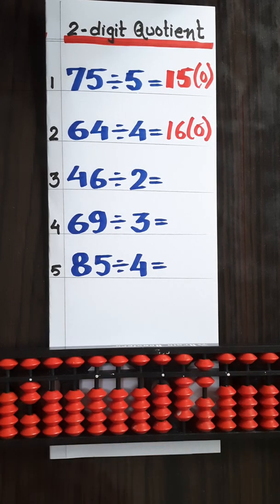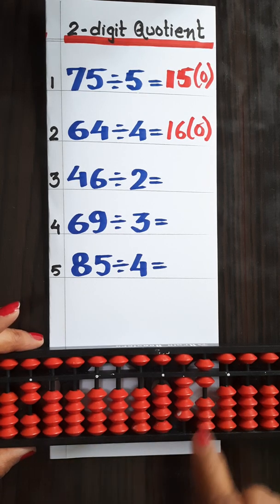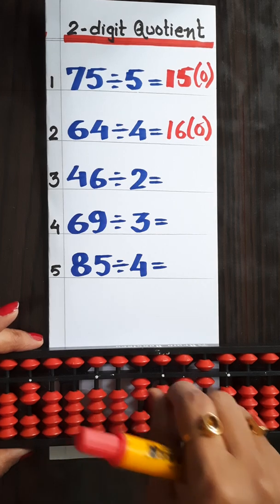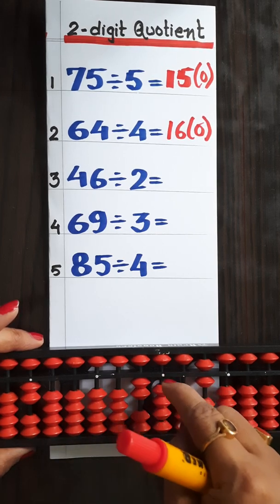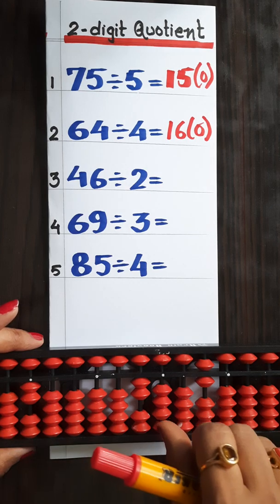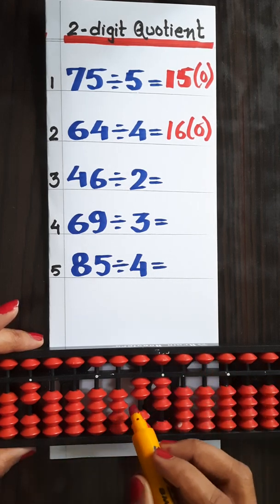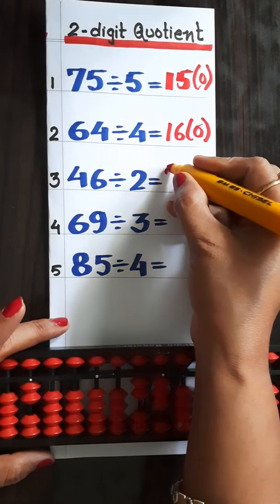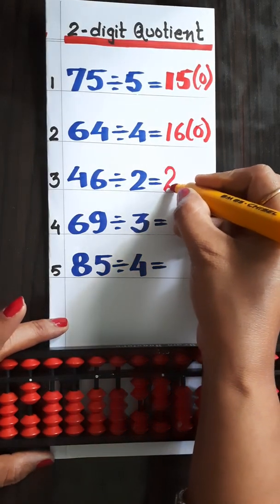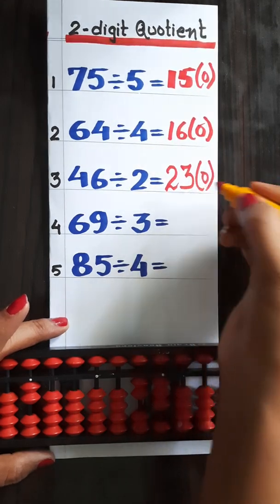Next question is 46 divided by 2. Table of 2 for 4 — it is greater, so again we will take digit by digit. 2 twos are 4. Second digit we will take in the second step: 2 threes are 6. So the answer is 23 and remainder is 0.